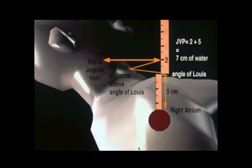For example, in this picture it is two centimeters above the sternal angle. We add five centimeters to this number to give the total jugular venous pressure. Normally it should be less than or equal to nine centimeters. In this picture, two centimeters plus five centimeters gives a total of seven centimeters, which is normal.